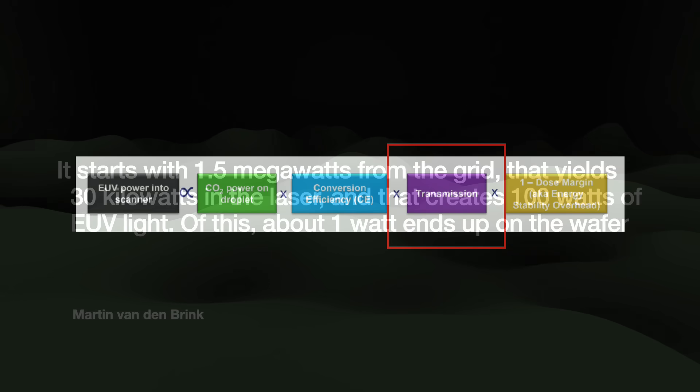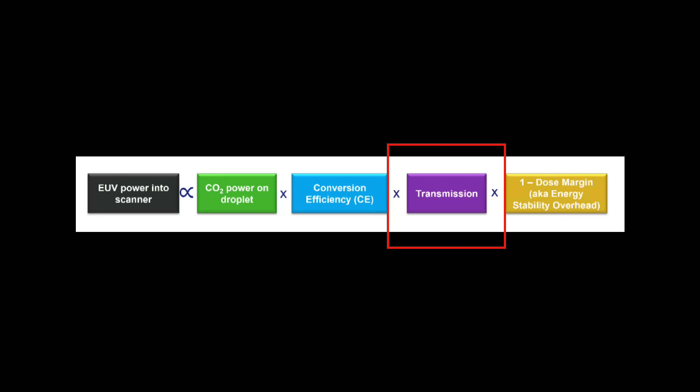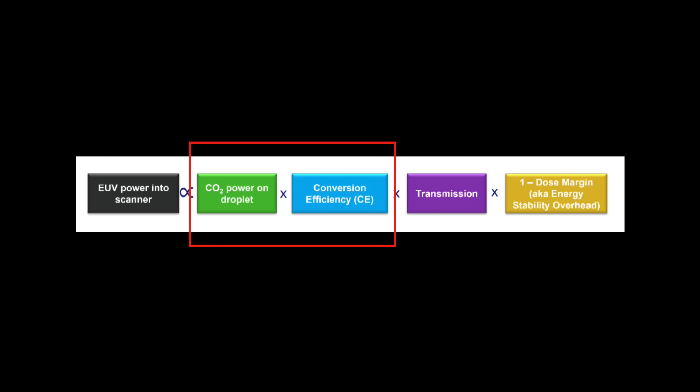There are a few other things to consider: how much EUV light is lost between where it is generated and when it enters the rest of the scanner system — that is called transmission — as well as how well we can maintain a stable power level. Optimizing those other factors does yield gains, but for this video we will focus on the first two components: power on droplet and conversion efficiency.